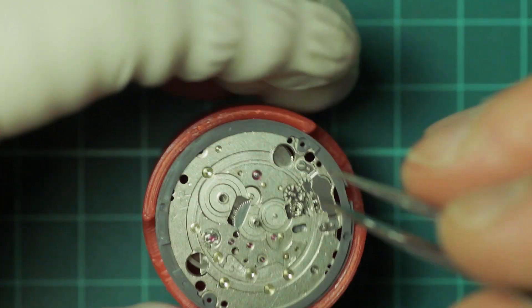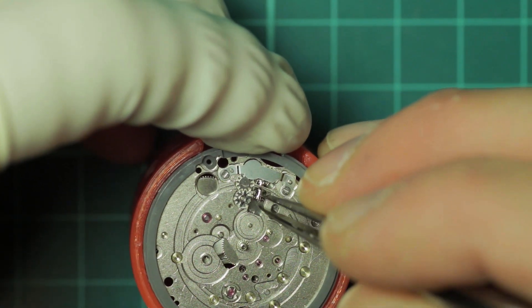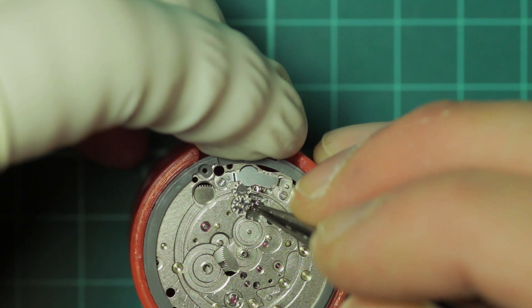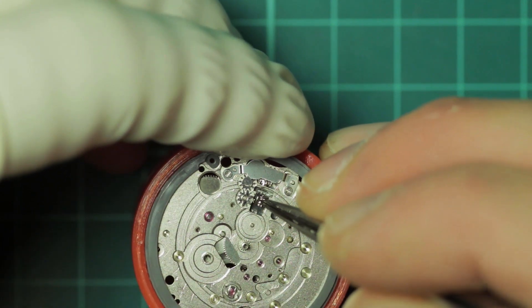Here we'll refit the clutch and the winding pinion after greasing them, making sure that the clutch engages with the yoke.